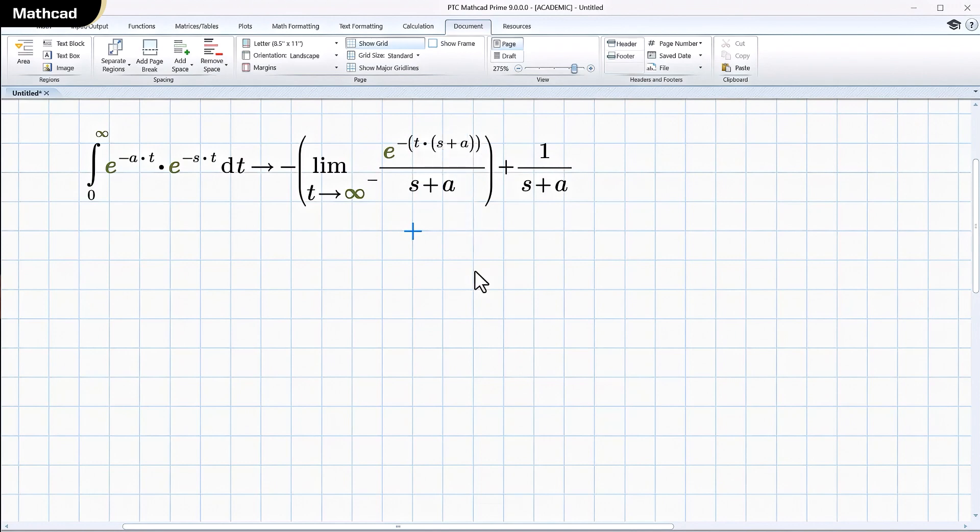If s plus a is negative, that negative and that negative make this e to some number that's going to diverge. If we assume s plus a is positive, this term goes to zero as t goes to infinity. So that whole expression in the parenthesis goes to zero.